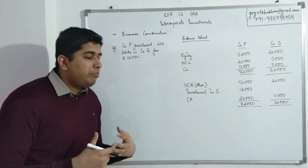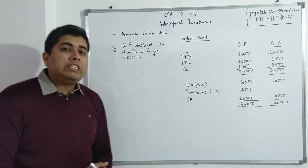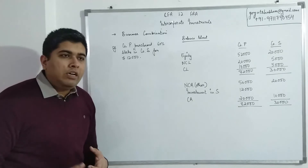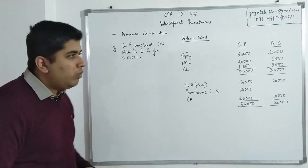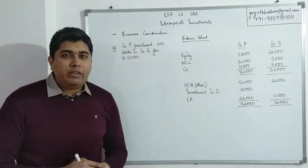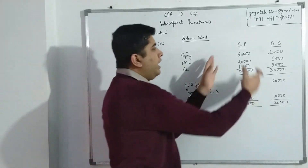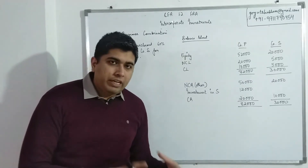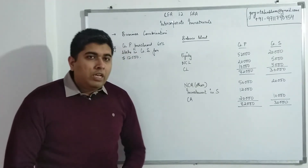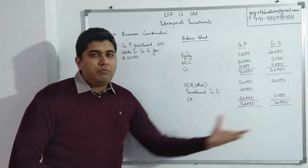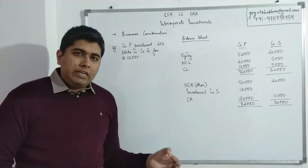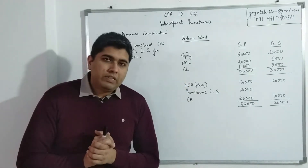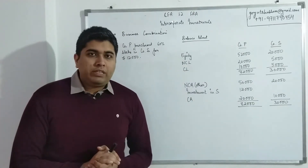Under the acquisition method, any holding company must produce two sets of financials: standalone financial statements — showing only Company P's own business — and consolidated financial statements, which include the business of all subsidiaries. The standalone statements are what we currently see. The acquisition method is applied when preparing the consolidated financials, which absorb the effects of all subsidiaries.